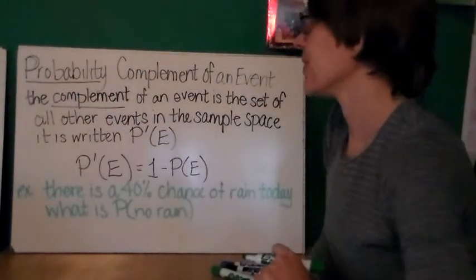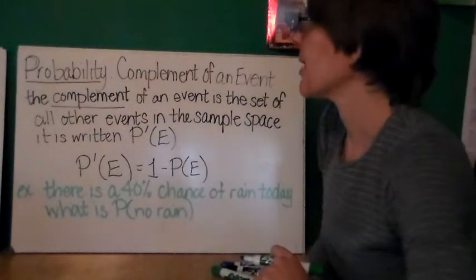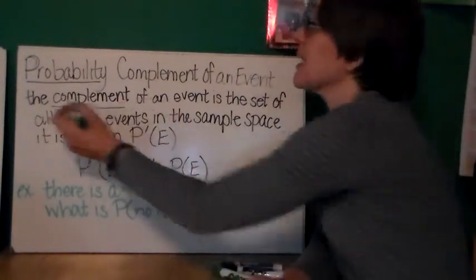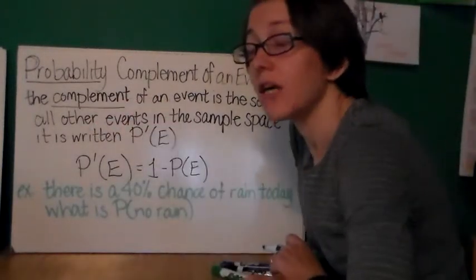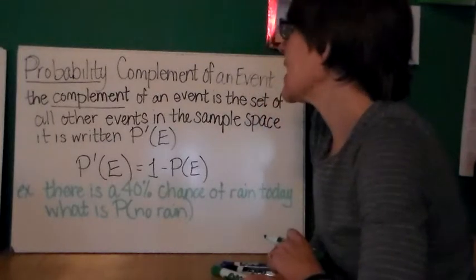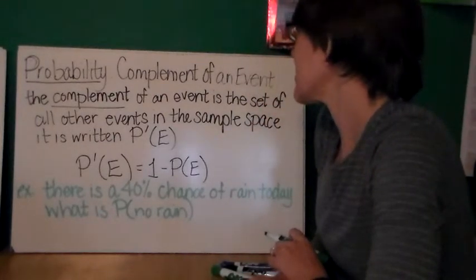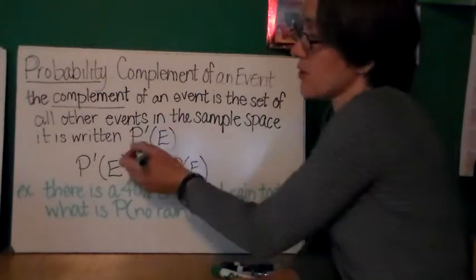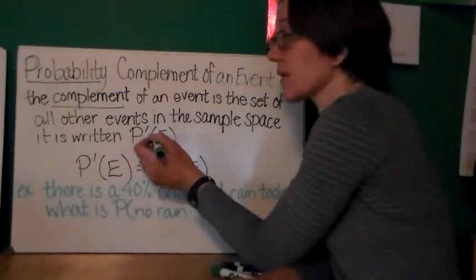Another thing to know about in probability is the complement of an event. Now, the complement of an event is spelled the same way as complementary angles. It is the completer. The complement of an event is the set of all other events in the sample space, and it's written as p prime (E).